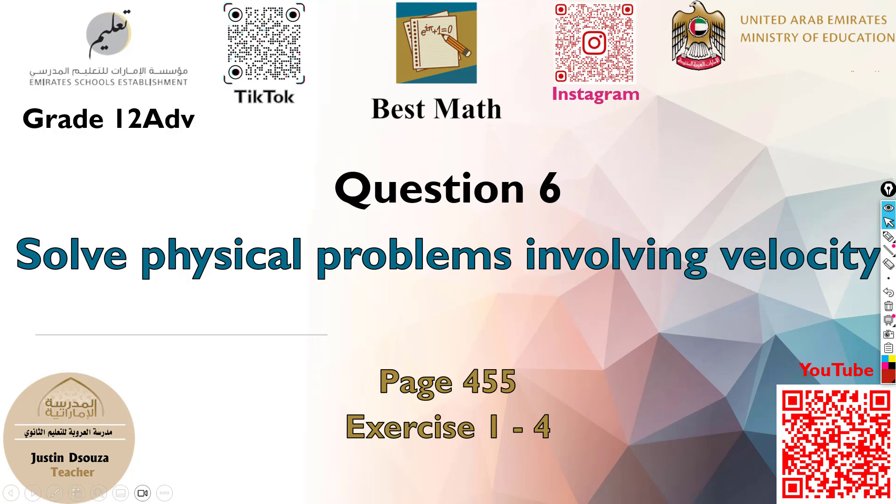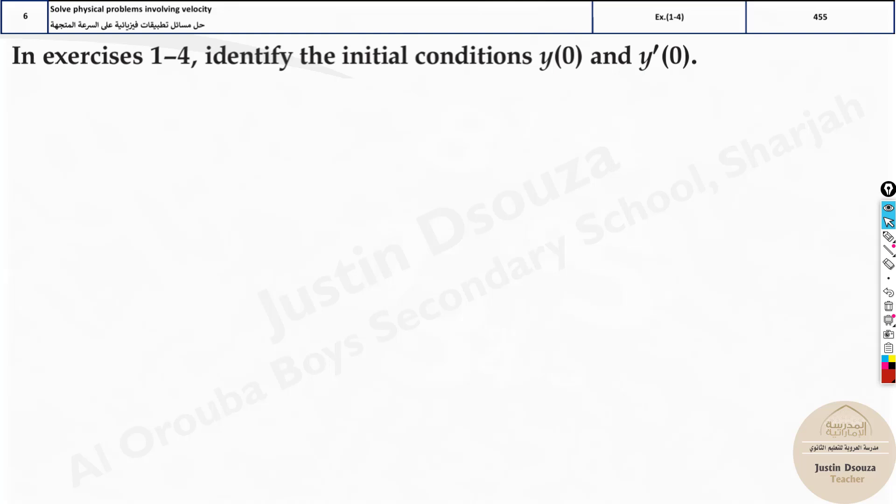Question 6 is to solve physical problems involving velocity. Here we are to determine the initial conditions. The question gives an object dropped from a height of 80 feet. You can see the height is the initial condition, that is y of 0. That is the first basic thing.